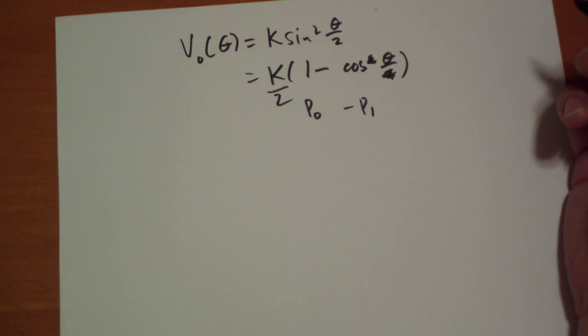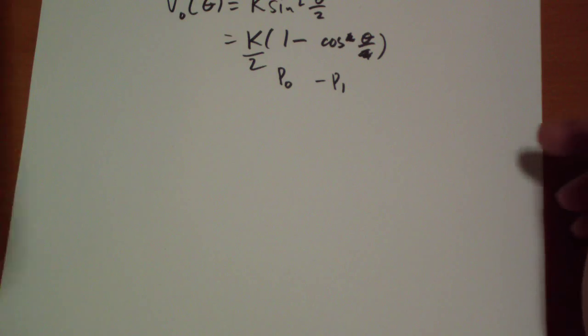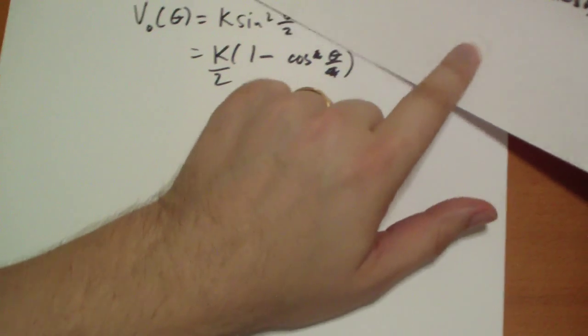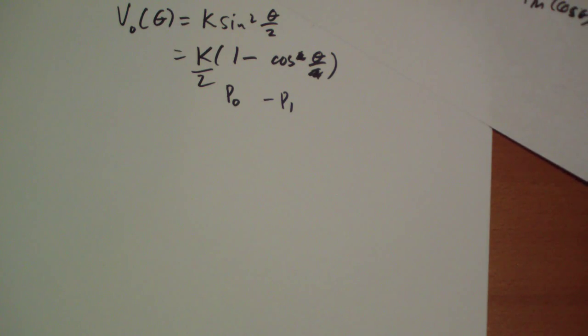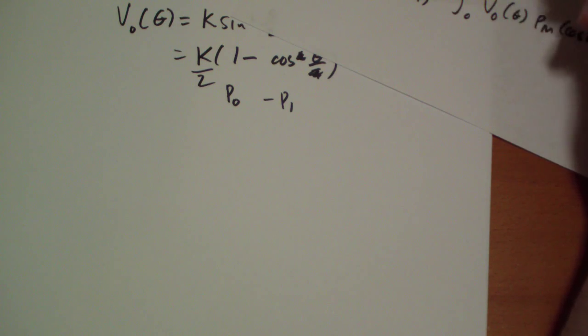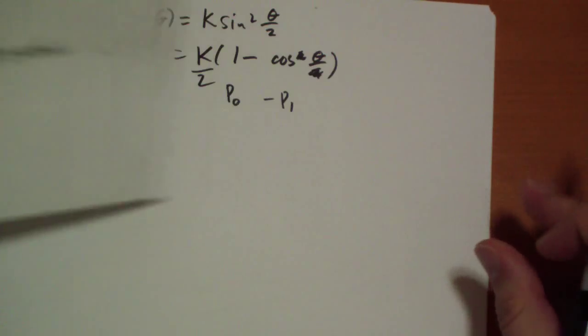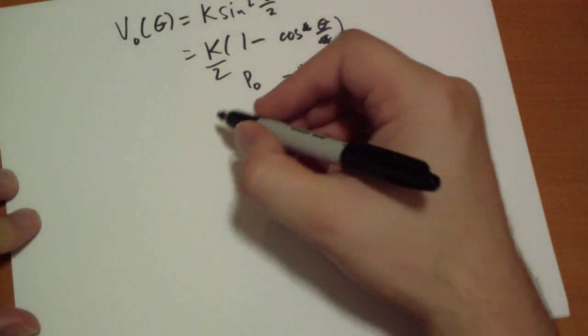So our potential is when we plug this potential into here, then only the P_0 and P_1 terms are going to survive, and we can read off here what it's going to be when they're equal. And the other one's going to be negative so we can write it out.